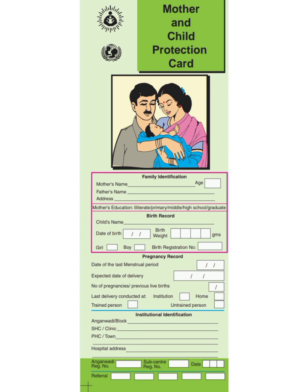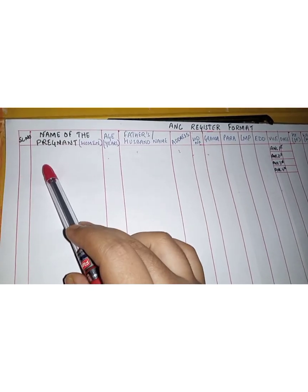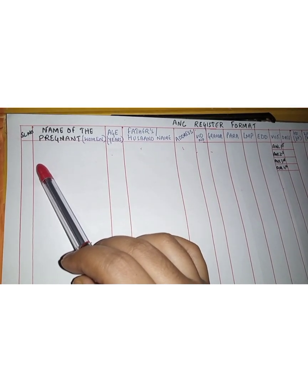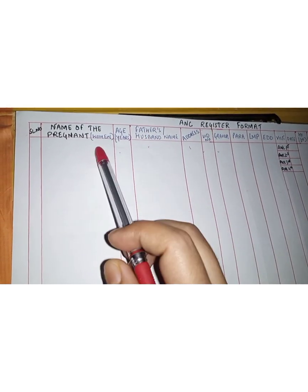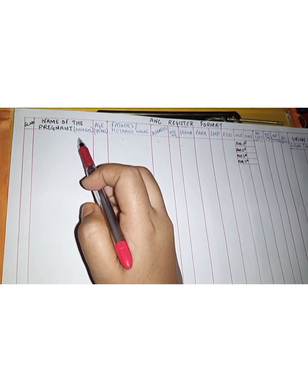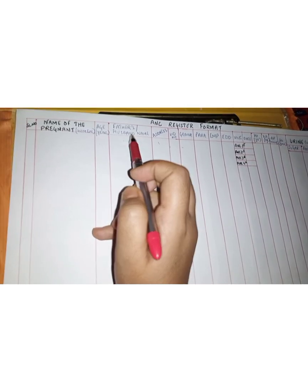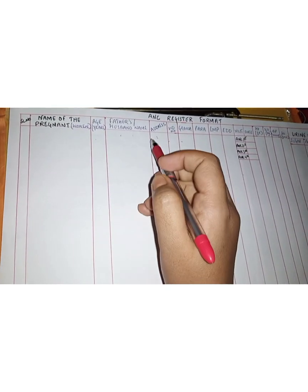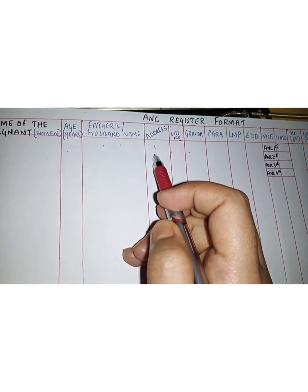All pregnant women should receive 100 iron folic acid tablets as prophylactic treatment for anemia, and TT injection. In the ANC register format, whenever a woman comes to the sub-center we record all details in the Mother and Child card, then register in the ANC register. We first give a serial number, followed by the name, age in years, father's or husband's name, and full address of the pregnant lady.